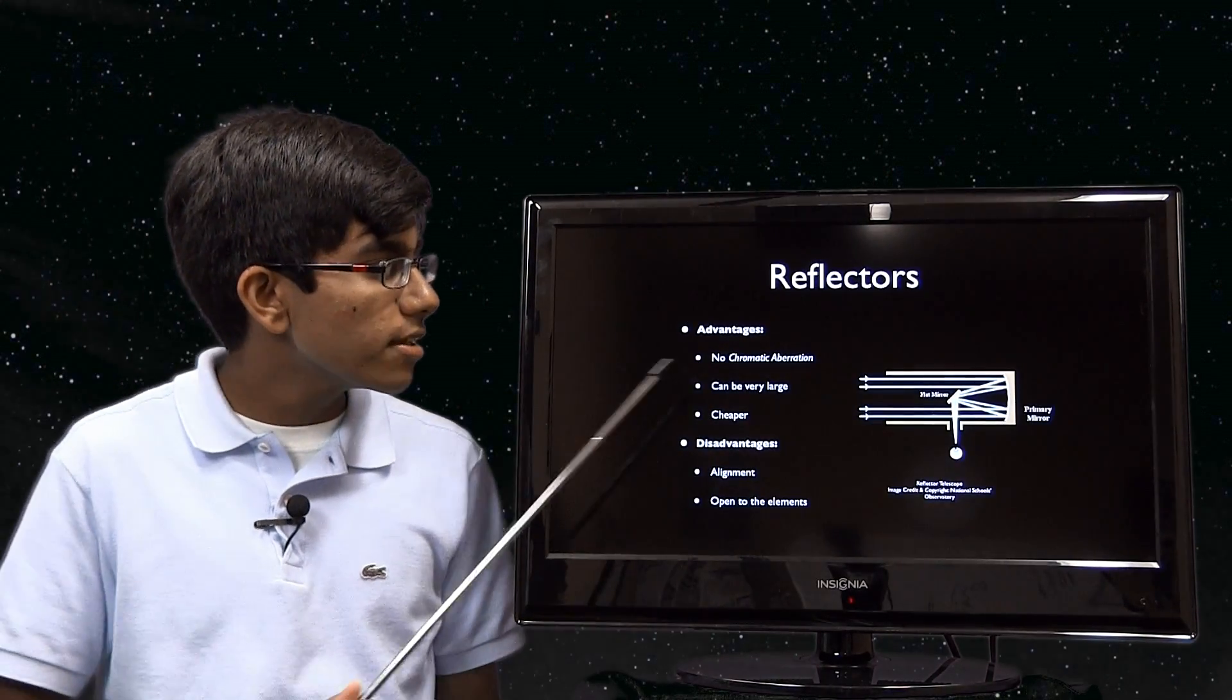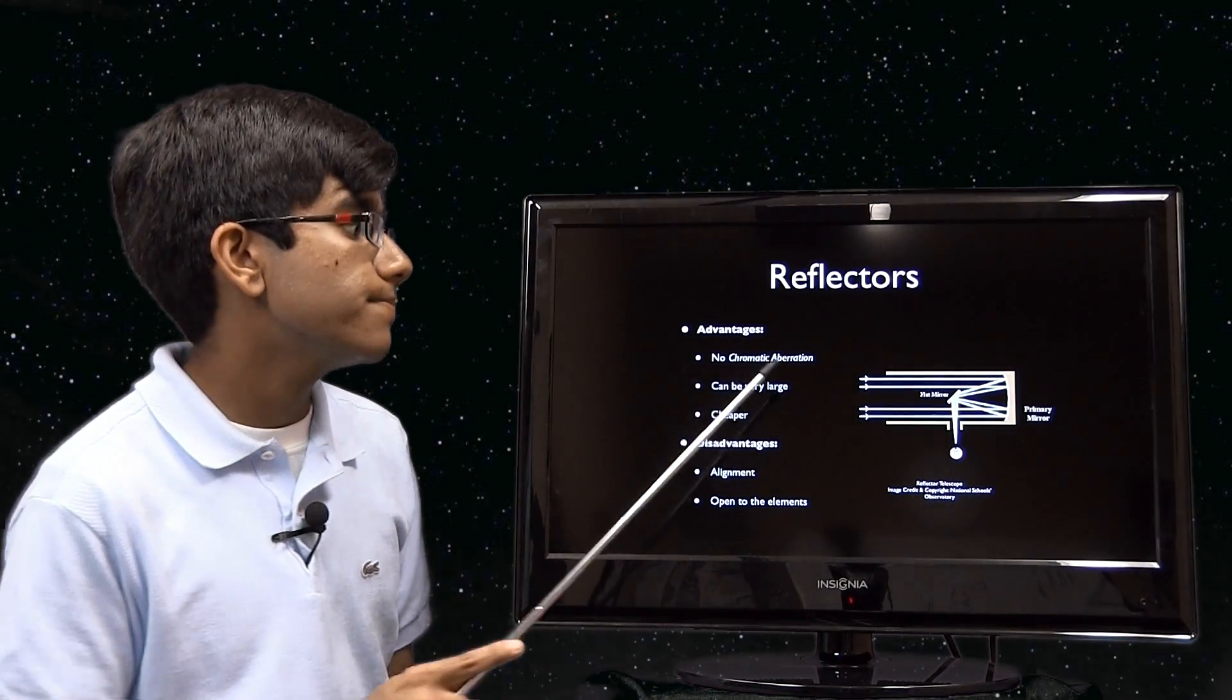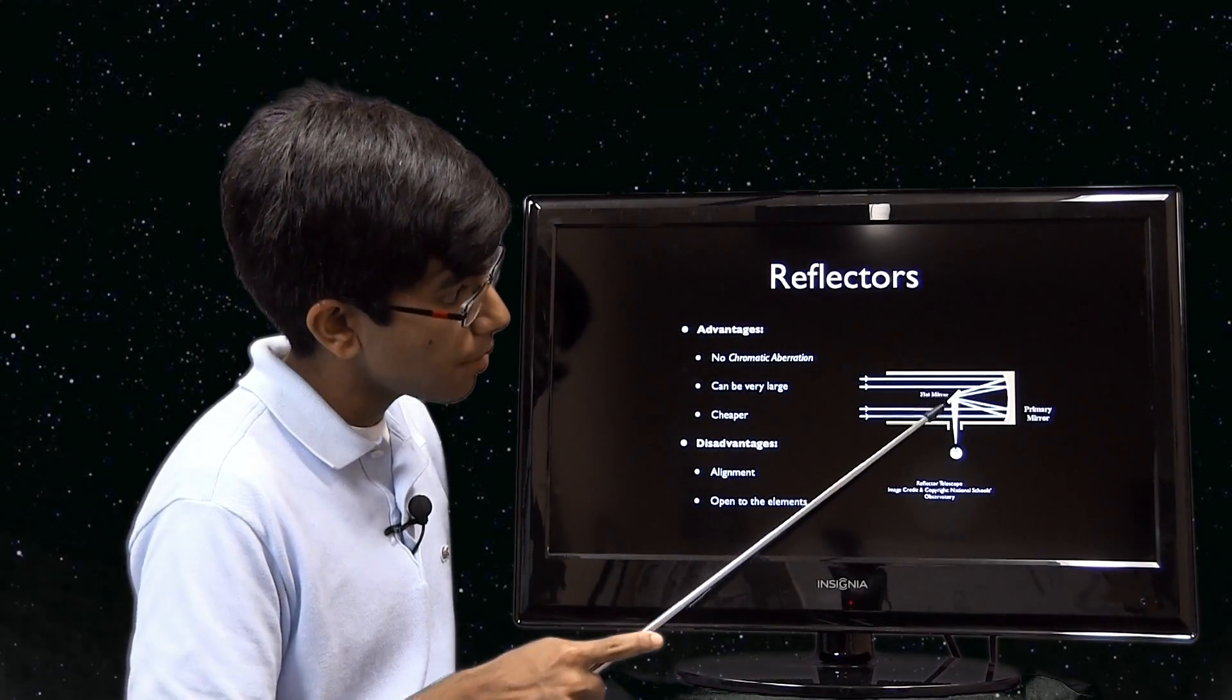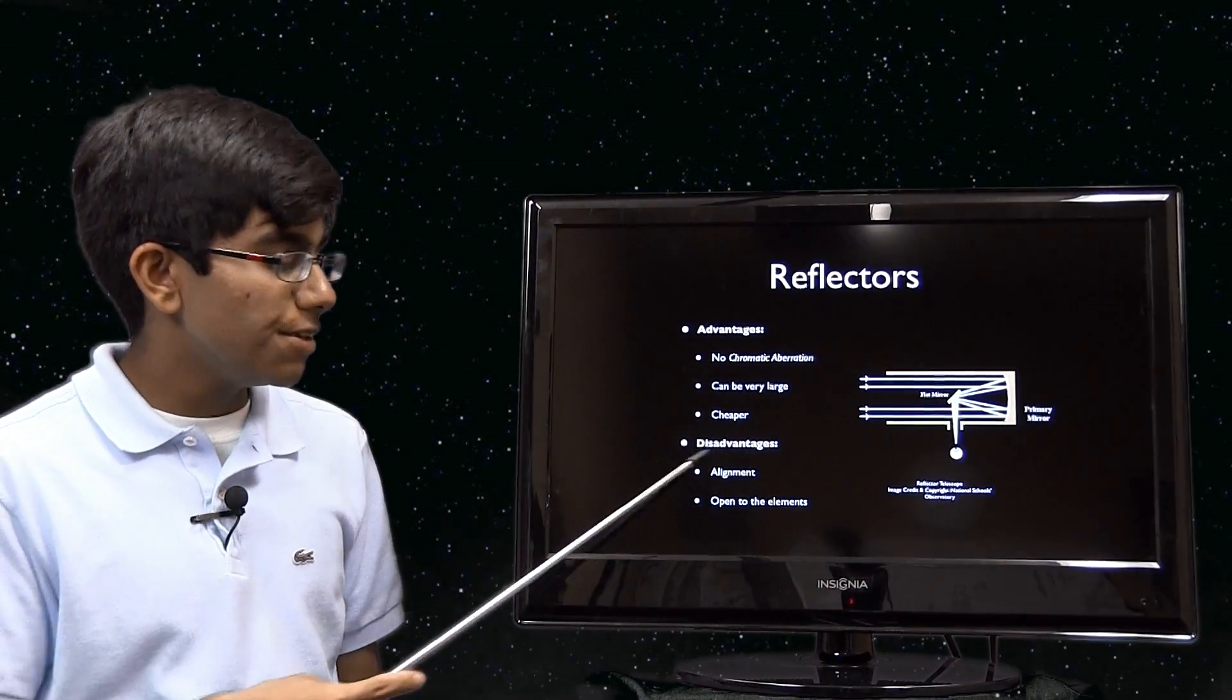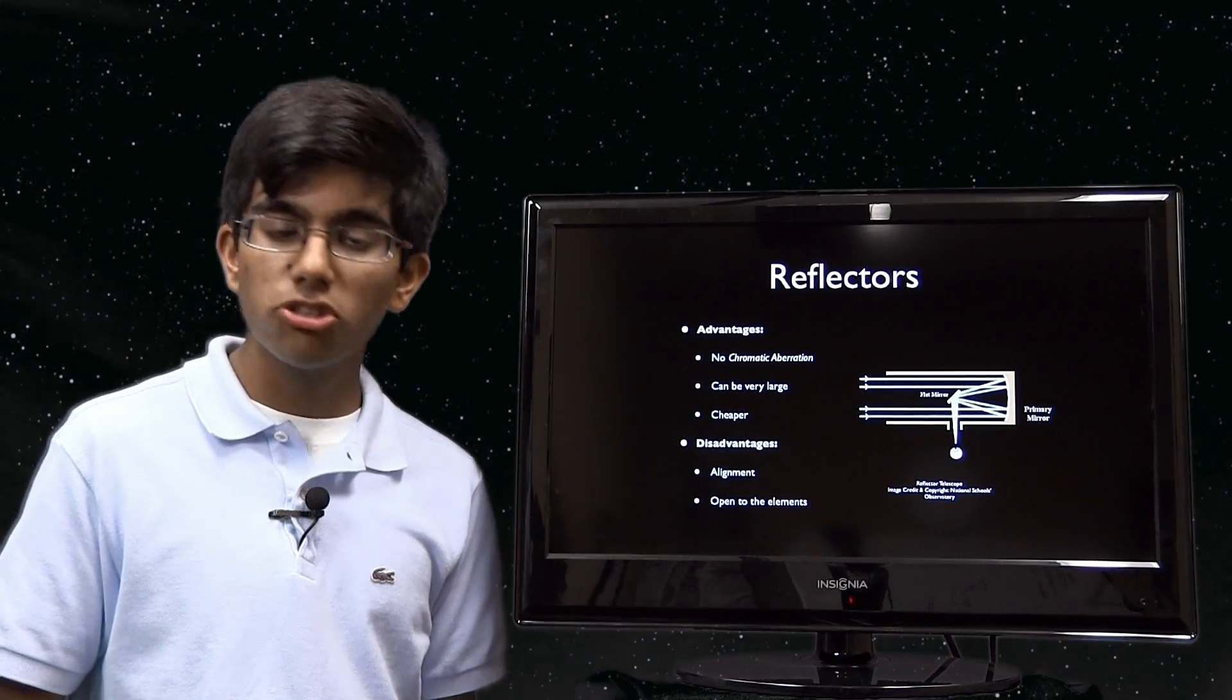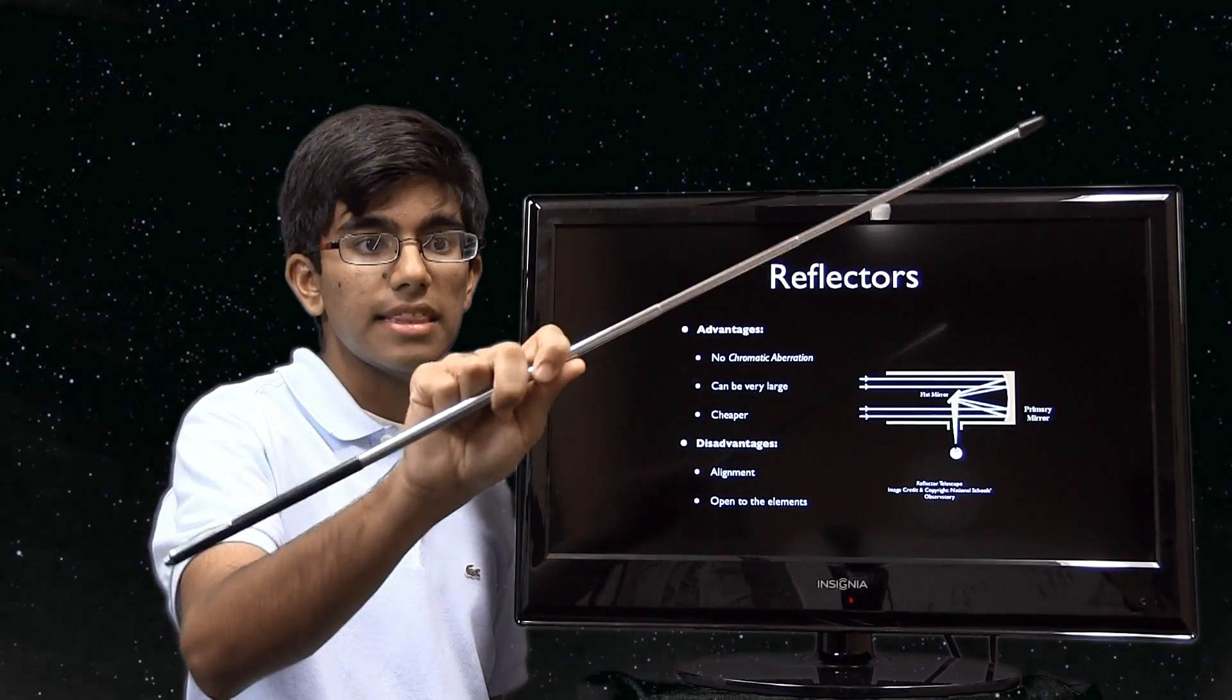Moving on to reflectors. Reflectors use mirrors instead of lenses, so they have no chromatic aberration. You can make them very large and they're normally cheaper and also lighter. Light goes here to here and then bounces off this curved mirror into a smaller mirror—the primary mirror, the flat mirror, the secondary mirror—and bounces out on the side to your eyepiece. Disadvantages: alignment on this is kind of awkward, and it's open to the elements on the top. If you look at a Dobsonian telescope, these are reflector telescopes. Normally they don't have sides. They have things called truss tubes.